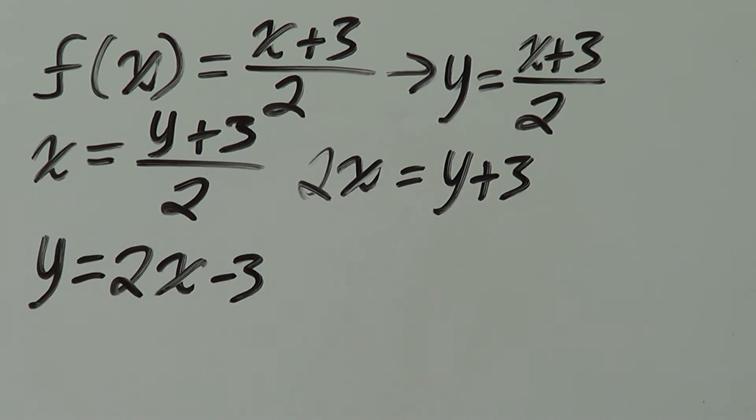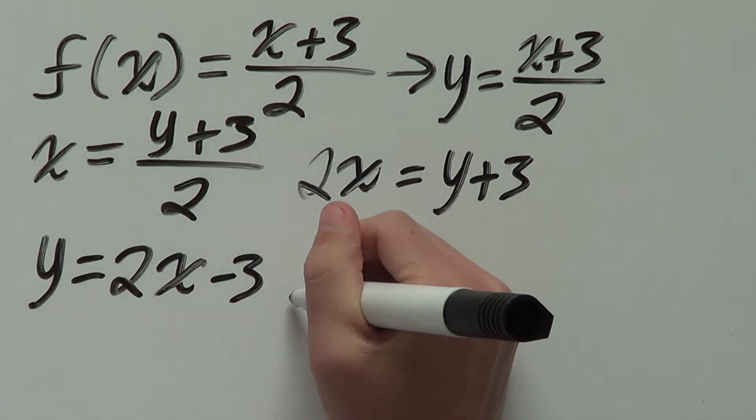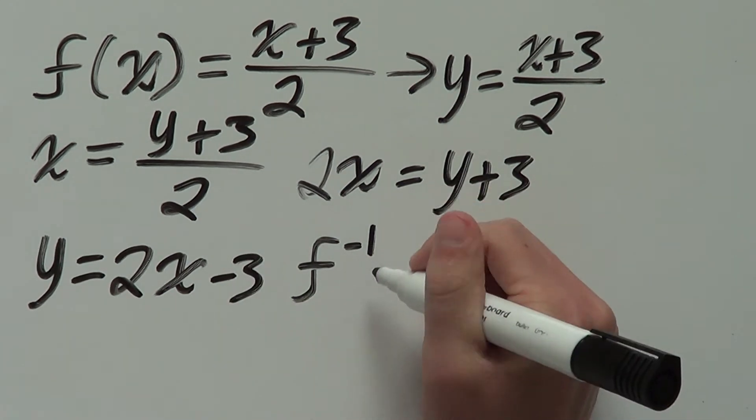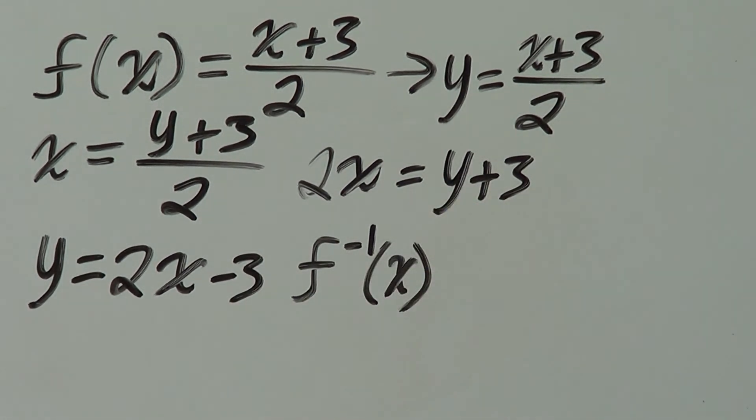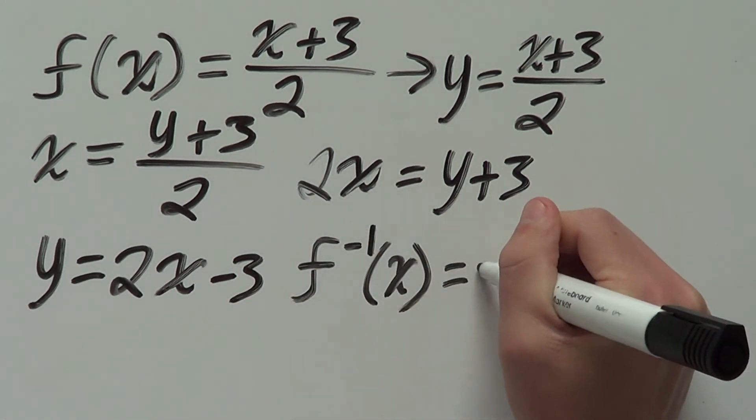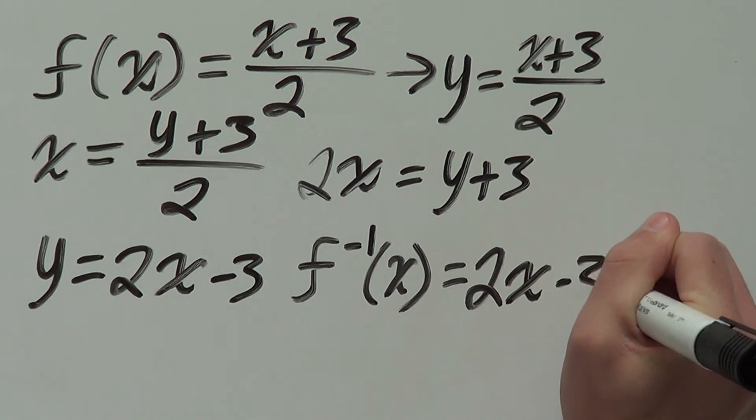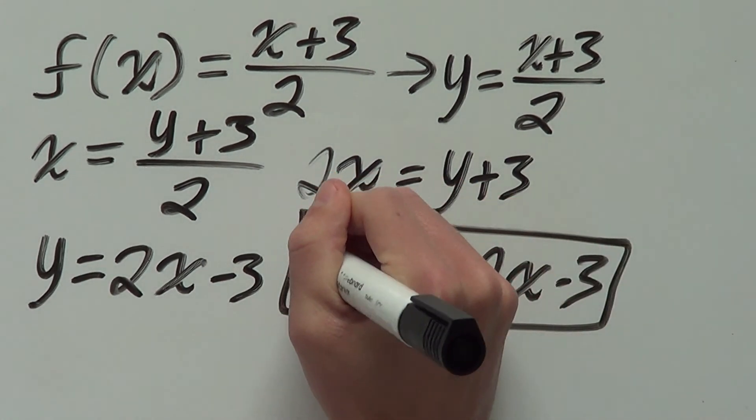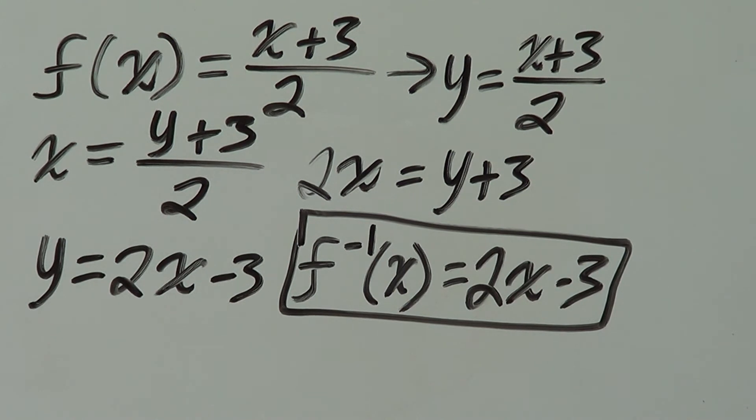And last but not least, step four. We write this in inverse notation. To write inverse notation, we just write f of x as f with a minus 1 of x. And that reads f inverse of x equals 2x minus 3. And that is the inverse of a rational function.